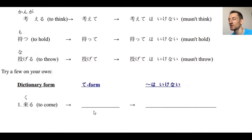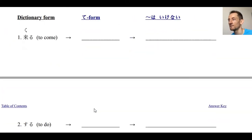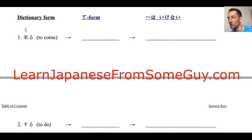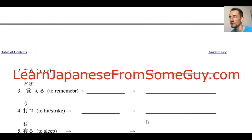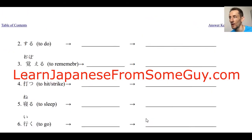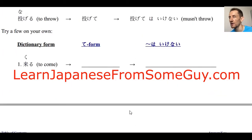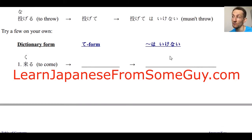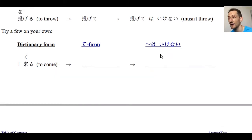Now we're going to practice a little bit. Remember, you can go to learnjapaneseframesomeguy.com and print out these practice problems to practice your writing. In the first column, write the te-form of the given verb, and then again with wa ikenai appended.